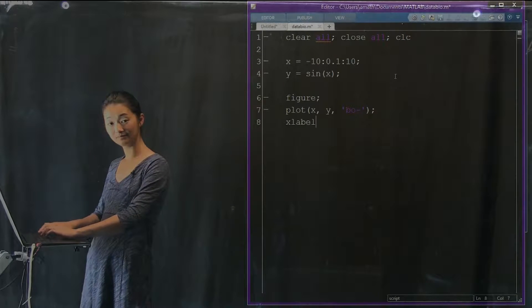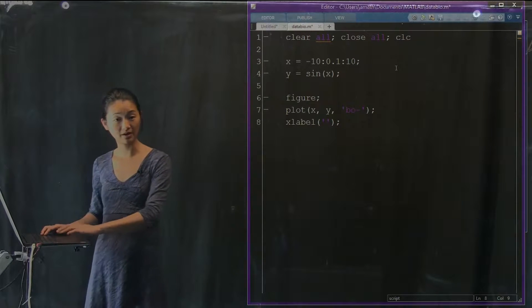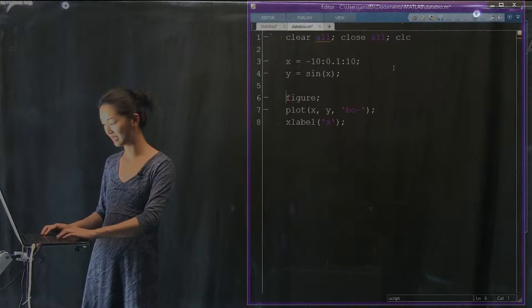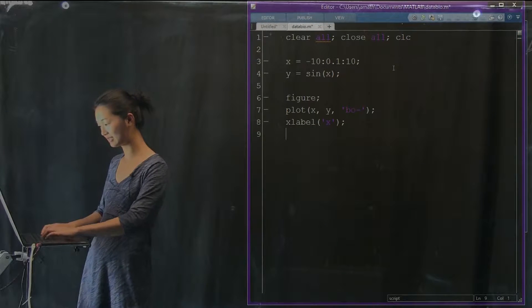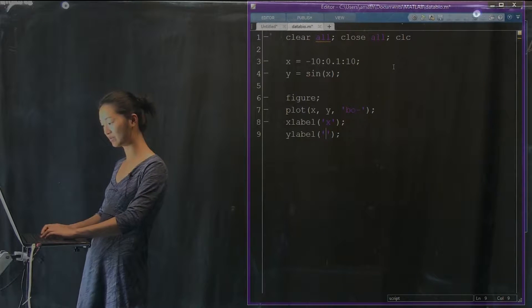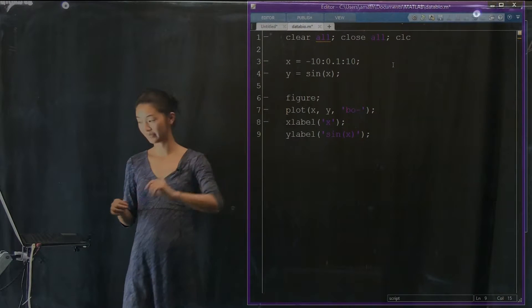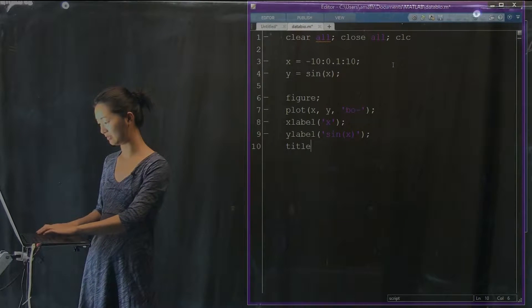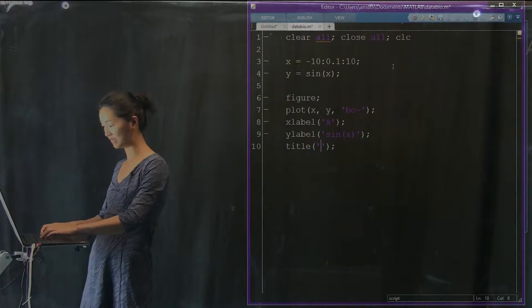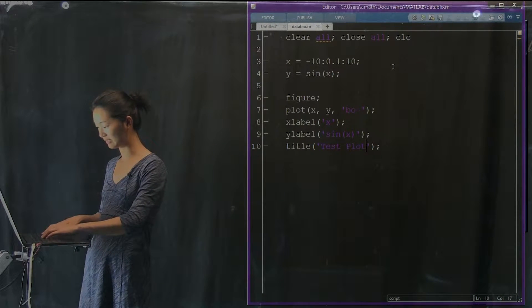To label the x-axis, not shockingly, we have the x-label function. The x-label function takes one argument that has to be some kind of string. So here I'm just going to type in x because that's what we're plotting on the horizontal axis. In addition, we're going to label the y-axis and it's the y-label function, which also takes exactly one argument. And in this case, what we're plotting is the sine of x. In addition, we might want a title that shows up at the top of our plot. And so that is achieved by the title function, which also takes in some kind of string as an input. Here I'm just going to label this test plot because this is my small function to show you guys what's going on.